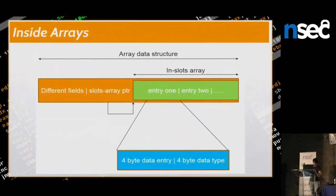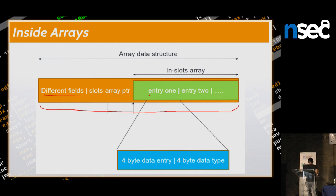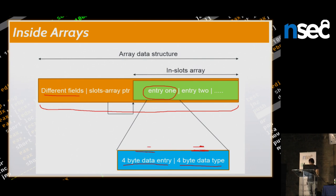Looking at Firefox array internals: when allocating an array in JavaScript in Firefox, I get a data structure with some header fields describing the array. Storing something at index zero places it in the slots array. Each data entry consists of four bytes for the data and four bytes for the data type. If I store an integer at index zero, the type field says 'integer' and the value field holds the integer. If I store a string, the type field says 'string' and the value field holds a pointer to the string data structure.